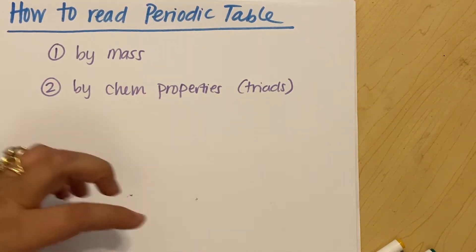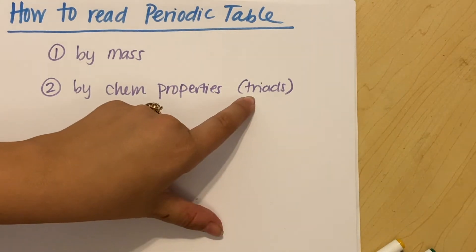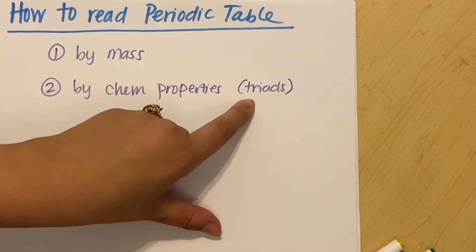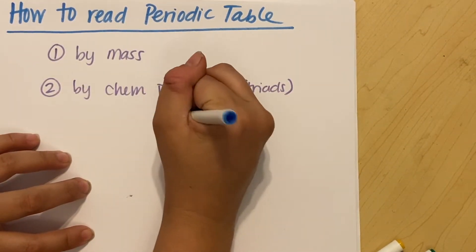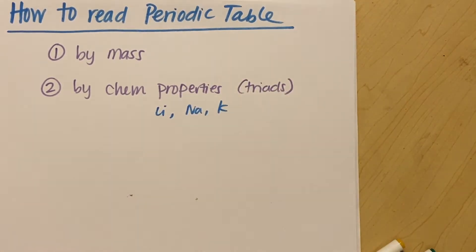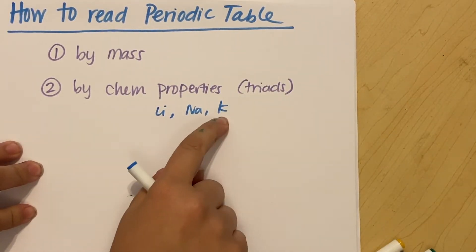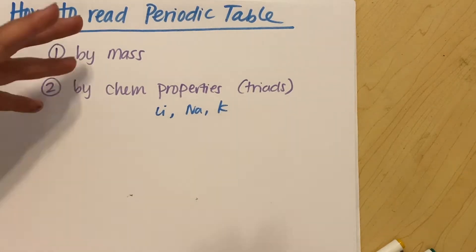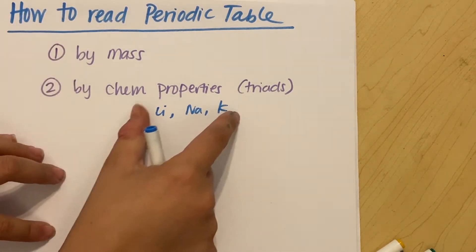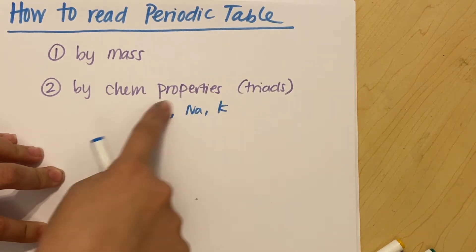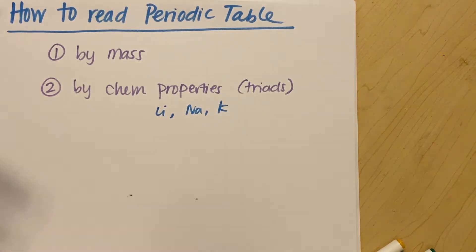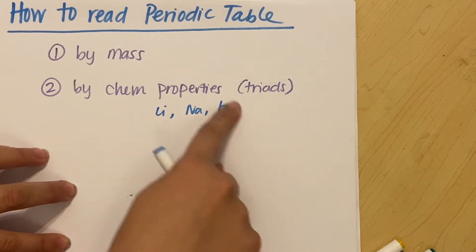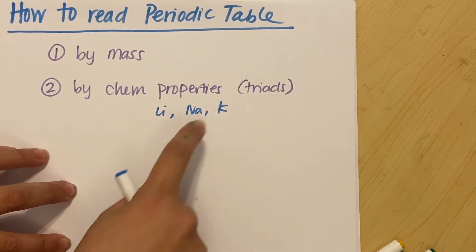Chemists back in the day would recognize that usually three elements would act very similarly — hence triad. They would have a group of three elements like lithium, sodium, and potassium. They would recognize that all three of these things react the same way when exposed to air or water. So they would group them together to say these are similar chemical properties. That was a very useful tool.